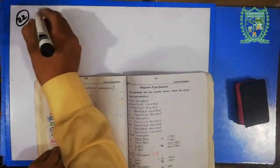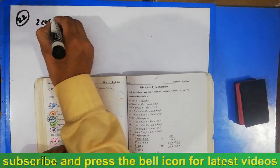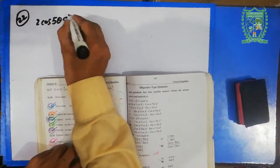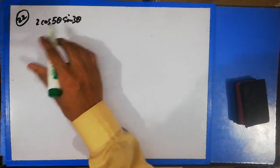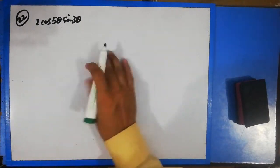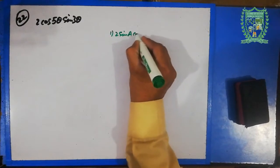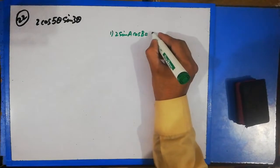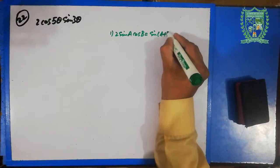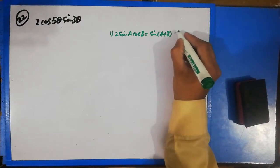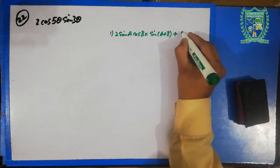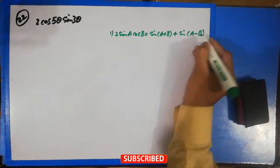Question number twenty-two: express as a sum or a difference. The question is cos5θ · sin3θ. I will write the formulas. The first formula is: 2cosA · cosB = sin(A+B) + sin(A−B).